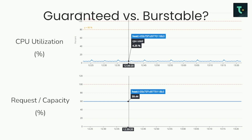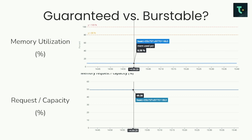Here's a real workload example: CPU allocations may be around 60% of available capacity, but actual utilization is only about 4%. For memory, utilization is around 8-8.5%, but Kubernetes shows about 50% allocated. This is why the Guaranteed (Cadillac) solution isn't always financially appealing — Burstable can make more sense for larger dedicated clusters.